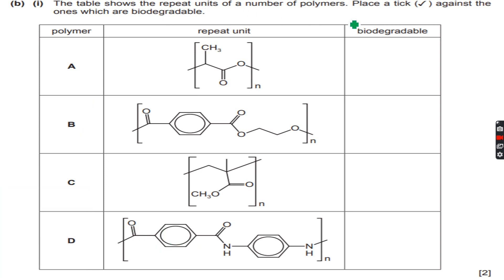Now let's do this example. The table shows the repeat units of a number of polymers. Place a tick against the ones which are biodegradable. We have this one, so we know that this is biodegradable because we have the ester group inside the polymer chain. We can have hydrolysis happening, so this will be biodegradable. Again, ester link within the polymer chain.